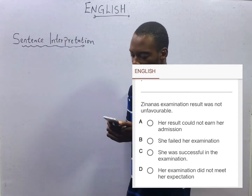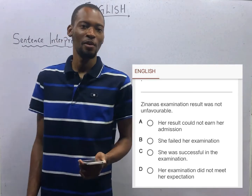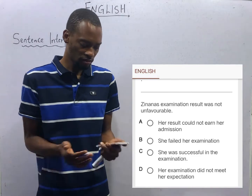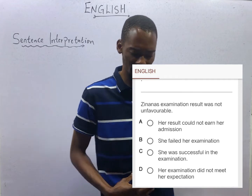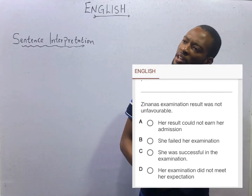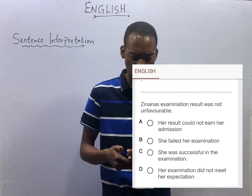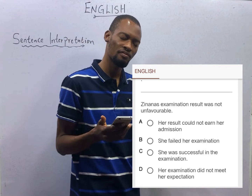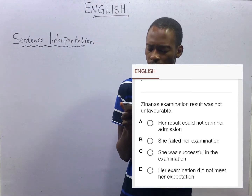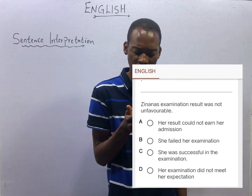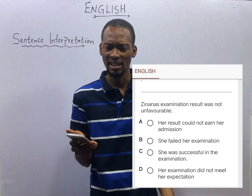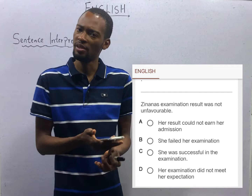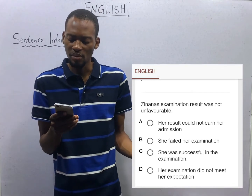Let's look at the options. Option A: 'Her result could not earn her admission.' We don't even know whether the result is for admission or a normal class exam, so we shouldn't go that far. Option B: 'She failed her examination' — if she failed, that means it was not favorable, but in this case it was favorable. Option C: 'She was successful in the examination' — if she was successful, it means the result was favorable. Option C makes a lot of sense. Option D: 'Her examination did not meet her expectations' — favorable means she was happy with the result and she passed. Option C is most appropriate.